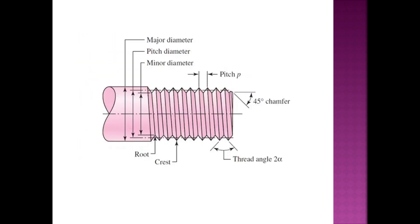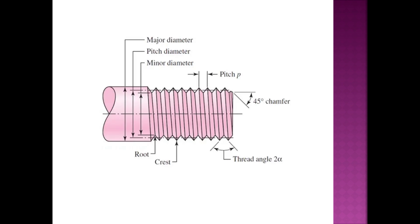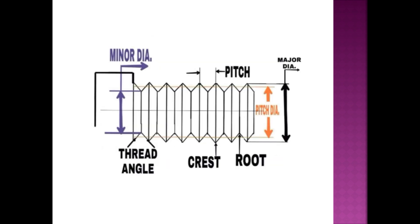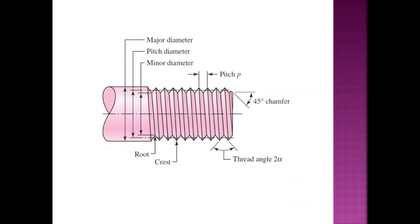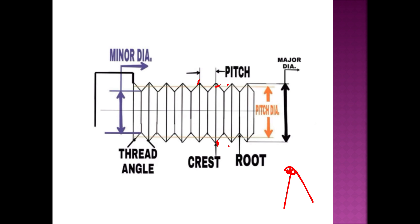First, the crest: the crest is the topmost part of the screw thread, joining two sides of a thread. The root is the bottom formed between two flanks of a thread — this is the bottommost point of the thread.